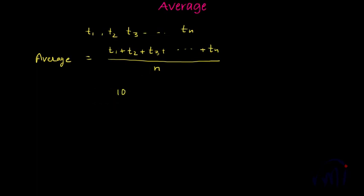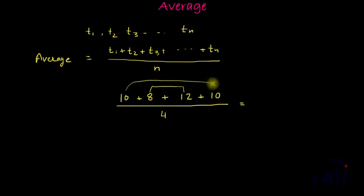There is some martial art class and suppose there are 4 children and their ages are 10, 8, 12, and 10. So the average age of that class if I want to find, I have to add all these ages and then divide it by 4. So if I add it, 8 plus 12 is 20 and 10 plus 10 is 20. 20 plus 20 is 40 divided by 4, so 10 years will be the average age of that martial art class. Very easy concept. So let's directly jump to solving questions.